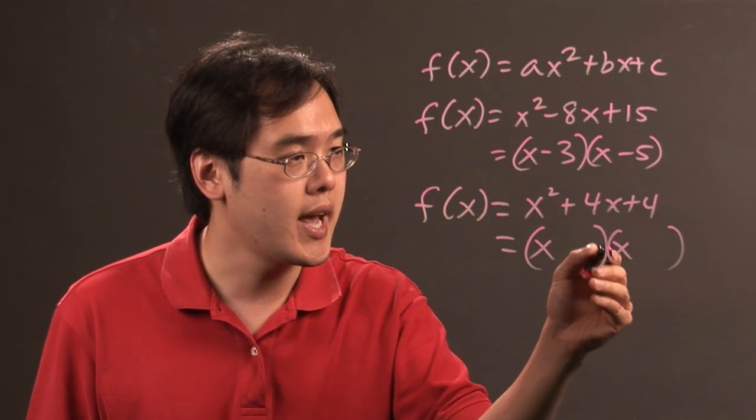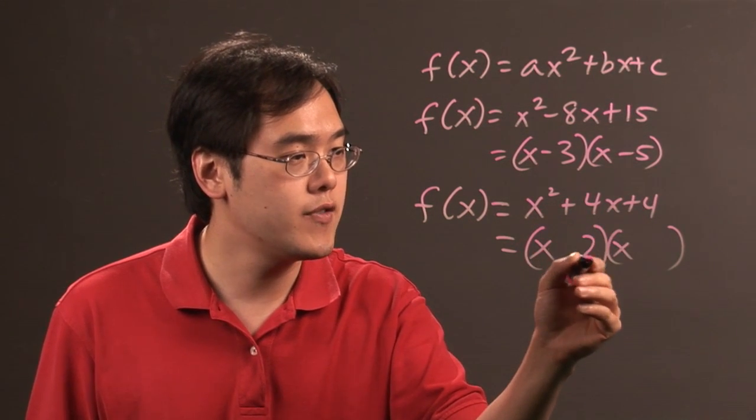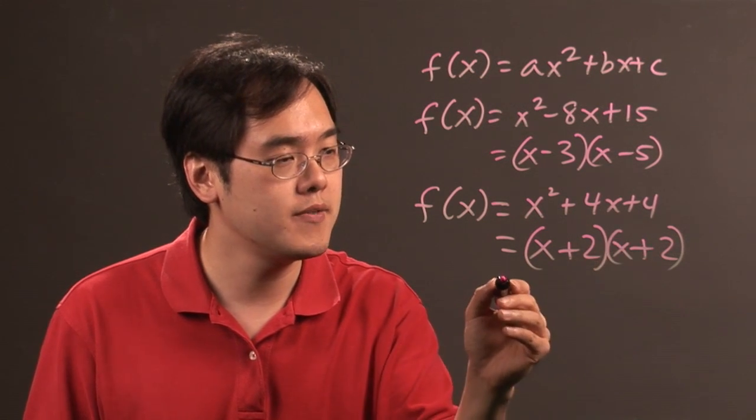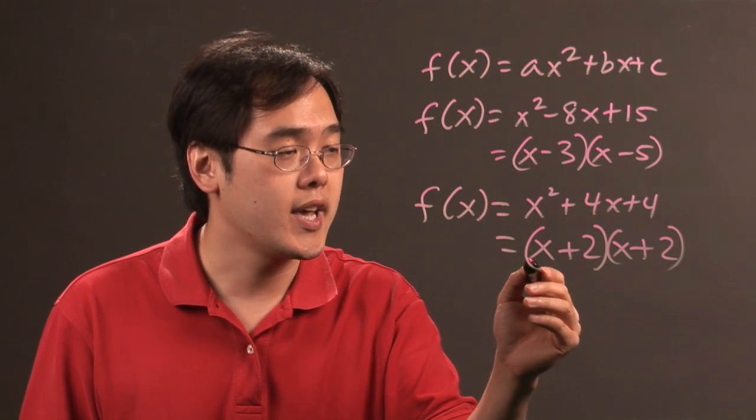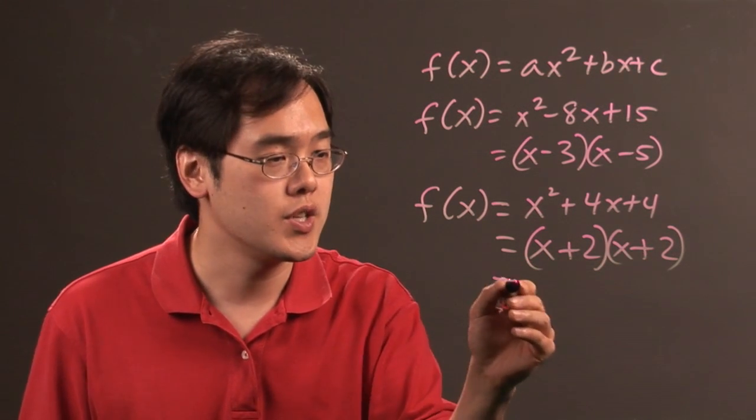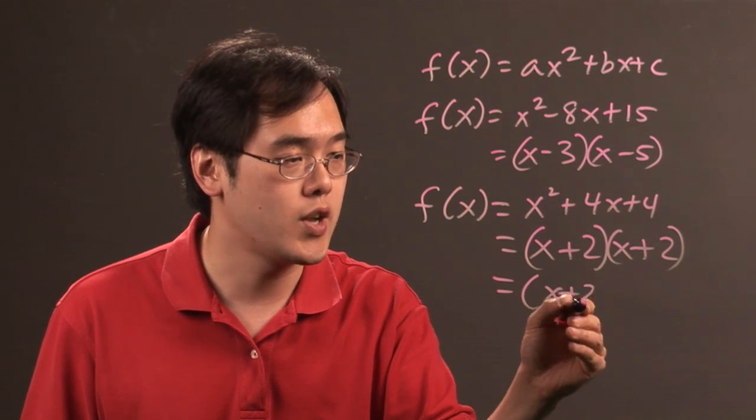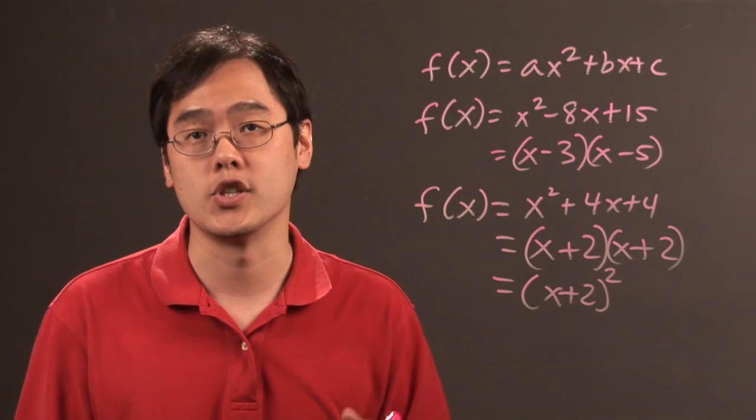x squared breaks up into x and x. Factors of 4 that add to give you 4 are 2 and 2. Signs are both positive. And in this case you have again a product of two linear functions, and in this case you can write it as x plus 2 squared because the parentheses do match.